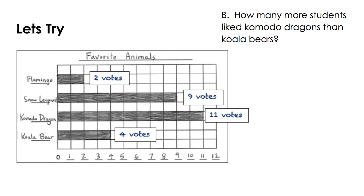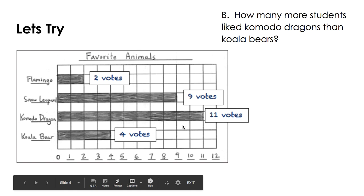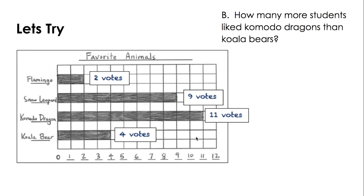How many more students liked Komodo dragons than koala bears? Well, there's two ways to do this. You might remember from yesterday on the picture graph. Yes, you can do the math. You can make a number sentence, but you might also just use the graph to see the difference between. So I'm noticing that koala bear only goes up to 4 and Komodo dragon goes up to 11. I can count the empty boxes in the koala bear row to figure out the difference. How many more students liked Komodo dragons is how many more votes it got. Or I can write the number sentence 11 minus 4.